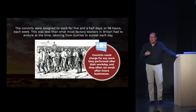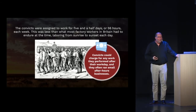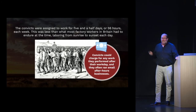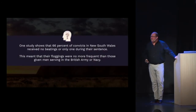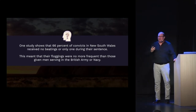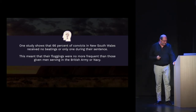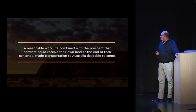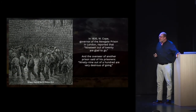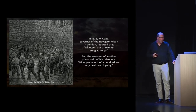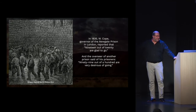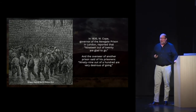Interestingly, convicts could also start their own businesses on the side and make their own money without paying any taxes. With earnings, they could invest and buy land outside of the city. The prospect that convicts would receive their own land became the Australian dream for many. One governor reported that 19 out of 20 were glad to go to Australia, and another said 99 out of 100 were very desirous of going.